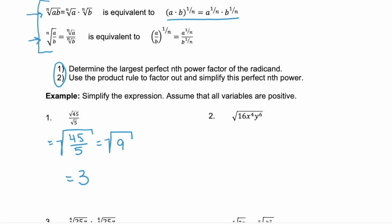In example two, we have three products — 16, x to the fourth, and y to the sixth — all under the same radical. I think it's going to be easiest if we break them apart. So that gives us the square root of 16, times the square root of x to the fourth, times the square root of y to the sixth. Since 16 is a perfect square, the square root of that is going to be 4.